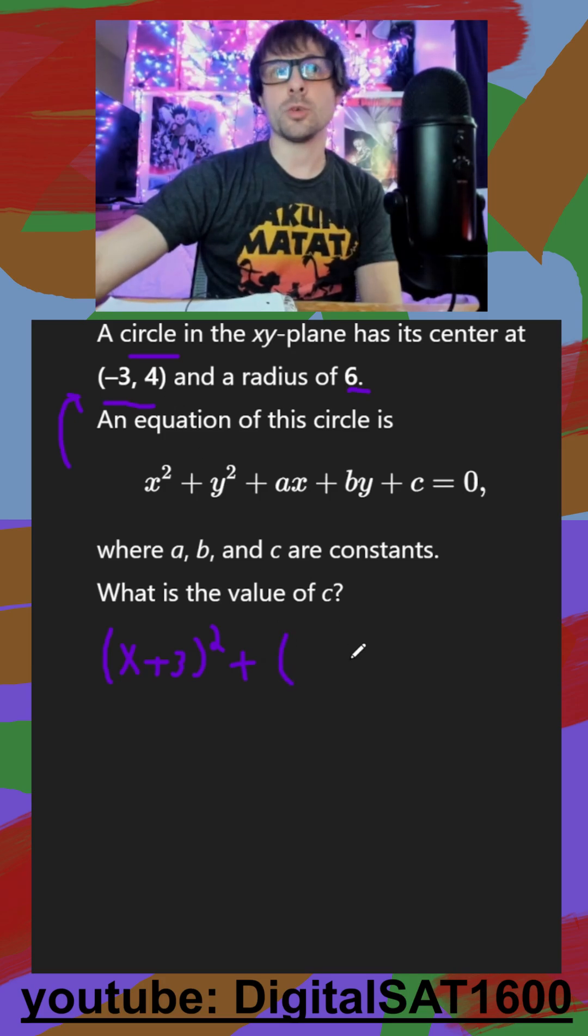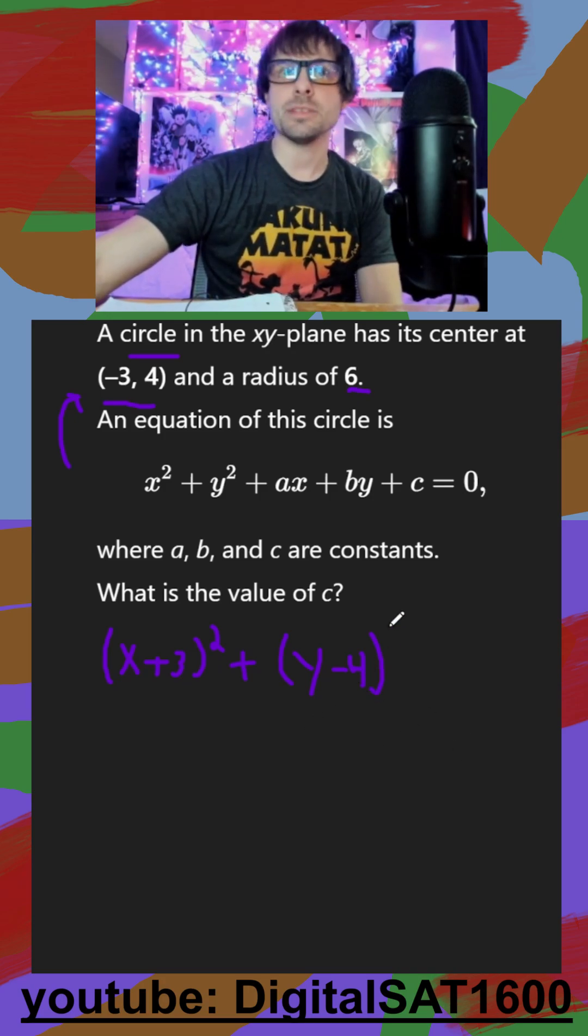And then it's going to be the opposite of your y, because it's in parentheses, so it's going to be y minus 4. And that's because when I plug in negative 3, or I plug in positive 4, it gets me to 0.